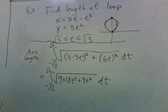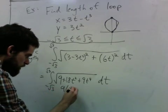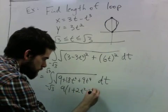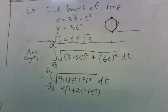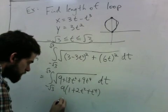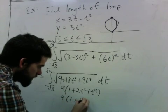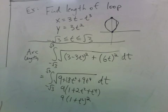Just like before, we get something really nice here. First I can factor out a 9, and this part is a perfect square, so I have 9 times (1 plus t²) squared. So let me put that in.